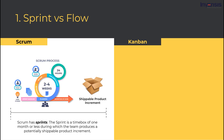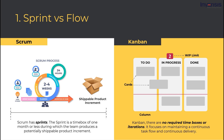Sprint versus Flow. In Scrum, the sprint is a timebox of one month or less during which the team produces a potentially shippable product increment. Sprints have consistent durations throughout a development cycle, and a new sprint starts immediately after the conclusion of the previous sprint. Scrum teams follow an inspect-and-adapt approach, improving continuously by taking lessons from previous sprints. In Kanban, there are no required time boxes or iterations. What we have instead is a continuous delivery flow system with work-in-progress limits to achieve higher speed, better focus, and productivity.